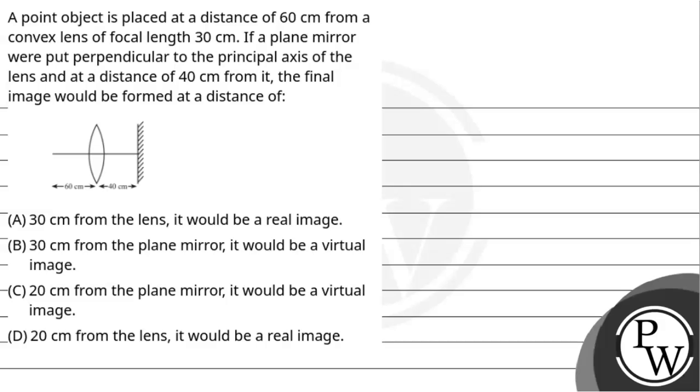Hello, let's hear out the question. Question says, a point object is placed at a distance of 60 cm from a convex lens of focal length 30 cm. If a plane mirror were put perpendicular to the principal axis of the lens at a distance of 40 cm from it, the final image would be formed at a distance of: